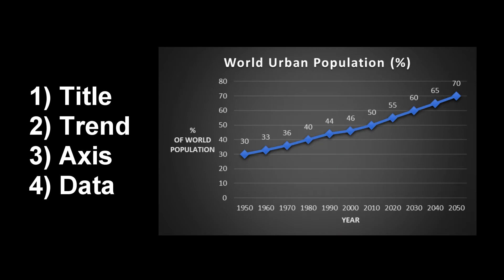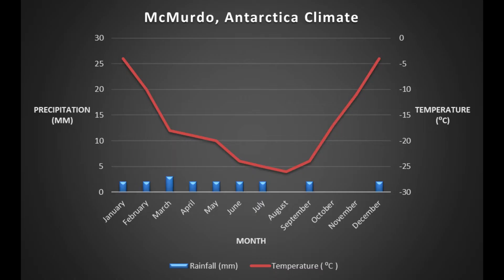Starting off with the title — what does the actual title of the data tell us? Is there a trend that you can see from the data straight away? What do the axes actually tell us and what are they labeled as? And then finally, actually look at the data points.